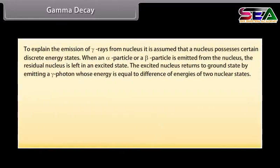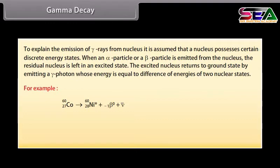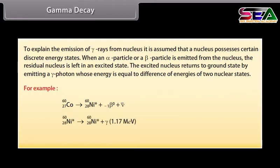Gamma decay: To explain the emission of gamma rays, it is assumed that a nucleus possesses certain discrete energy states. When an alpha or beta particle is emitted, the residual nucleus is left in an excited state. The excited nucleus returns to its ground state by emitting a gamma photon whose energy equals the difference between the two nuclear energy states. For example, cobalt-60 (Z=27) transforms into nickel-60 (Z=28) in its excited state, which returns to ground state by emitting two successive gamma photons of energies 1.17 MeV and 1.33 MeV.